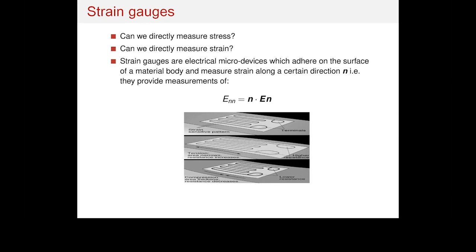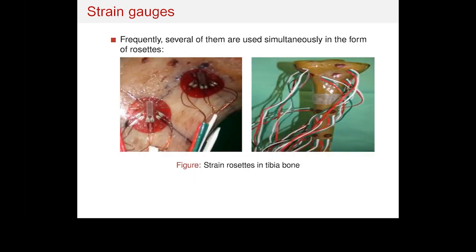The last thing to discuss in relation to strains is strain gauges. Usually you cannot measure stress directly, so what you can measure is the strain, which is related to displacement. Strain gauges typically come in the form of a rosette and are fixed to the surface of the object where you want to measure strains. These are micro devices with electrical resistance — once you deform them, the resistance changes, and from that change you can determine the amount of strain the rosette is undergoing.